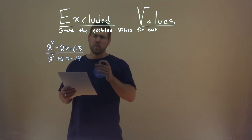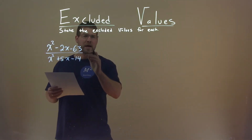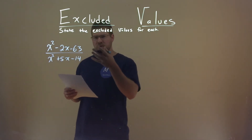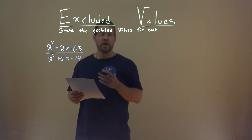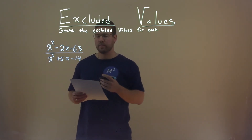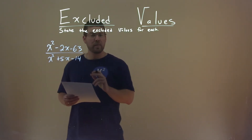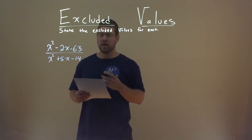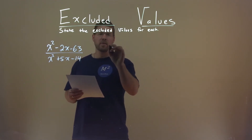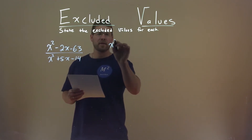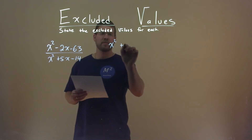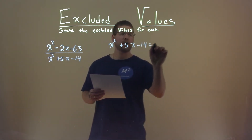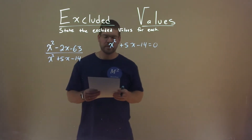We have a rational function and we know with fractions, or division, we cannot divide by 0. So if our denominator is equal to 0, there we have our excluded value. So we're going to take our denominator, x squared plus 5x minus 14, and set it equal to 0.